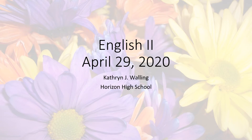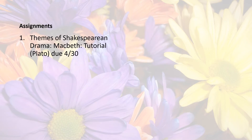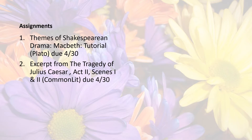Here's what's happening in English 2 on April 29, 2020. Your assignments: Continue to work on Themes of Shakespearean Drama, Macbeth, the tutorial in Plato. It is due April 30. Continue to work on the excerpt from The Tragedy of Julius Caesar, Act 2, Scenes 1 and 2, in CommonLit. It is due April 30.